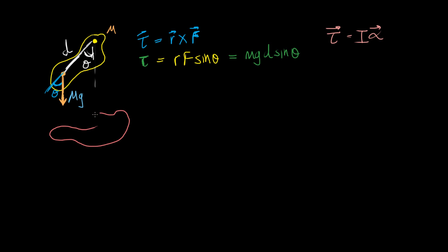So if this is some body and if this is the center of mass, let's say c, and if this is the pivot point, and if this distance right here is l.